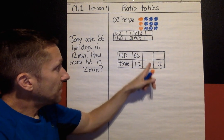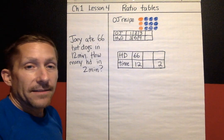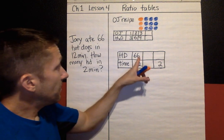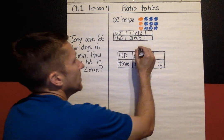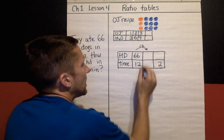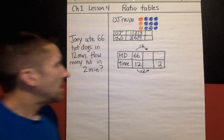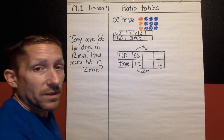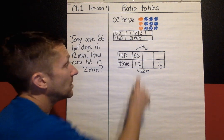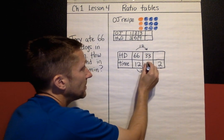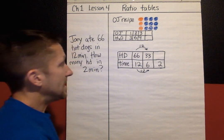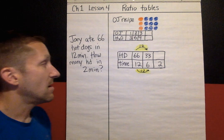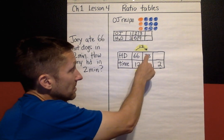The big idea today is: if you multiply or divide by the same number, the ratio stays equal. Starting with 66 hot dogs in 12 minutes, I noticed that 2 goes into both 66 and 12. Dividing by 2 is the same as finding half — half of 66 is 33, half of 12 is 6. So this ratio is equivalent to that ratio.